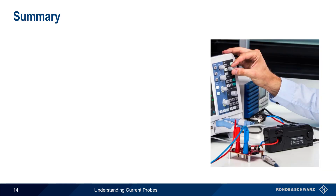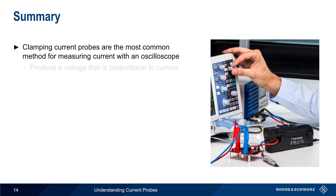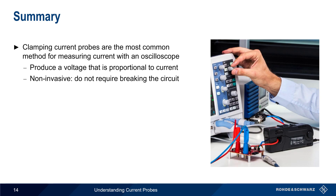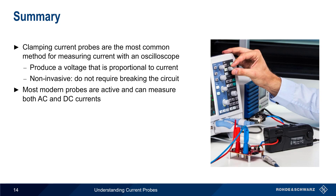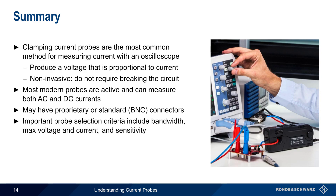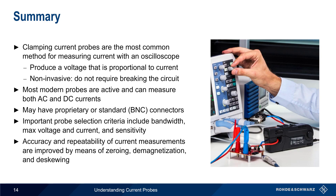Let's end with a brief summary. Clamp-style current probes are the most common method for measuring current with oscilloscopes. These probes produce a voltage proportional to the measured current and are non-invasive — they don't require the circuit to be broken. Most modern current probes are active and can measure both AC and DC currents using a combination of a current transformer and a Hall effect sensor. Probes may have proprietary or standard BNC connectors, each with advantages and disadvantages. Important parameters when choosing a probe include bandwidth, maximum voltage and current rating, and sensitivity. Measurement accuracy and repeatability can be improved by zeroing, demagnetization, and deskewing. This concludes our presentation, Understanding Current Probes. For more on current measurements, probing, or other oscilloscope-related topics, please see the links in the video description.